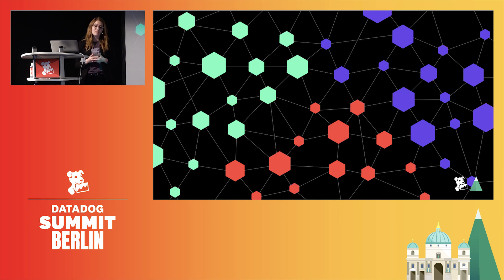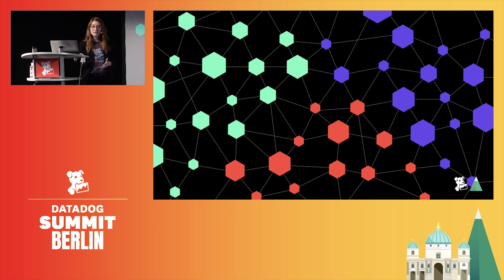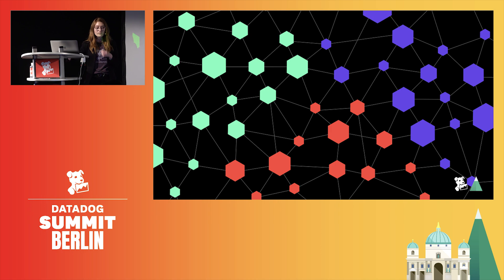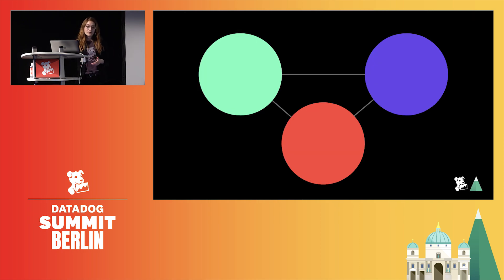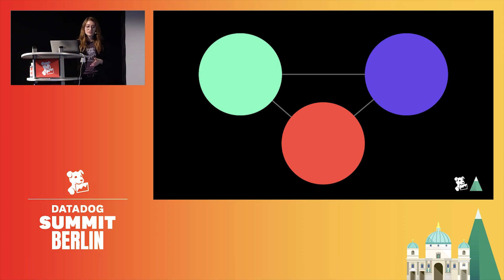Datadog network performance monitoring provides visibility across any of your tags, like high-level tags such as availability zones and services, all the way down to the container and even process levels. This allows you to aggregate your network metrics between any two types of objects across your infrastructure and applications, whether hosted on-prem or in the cloud.